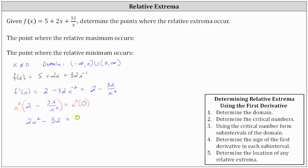To isolate x squared, we add 32 to both sides, giving us 2x squared equals 32. Dividing both sides by 2, we get x squared equals 16. Taking the square root of both sides and including plus or minus to get both solutions, the critical numbers are x equals plus or minus 4.